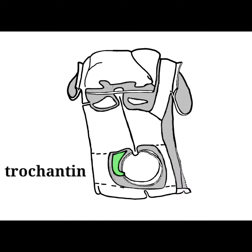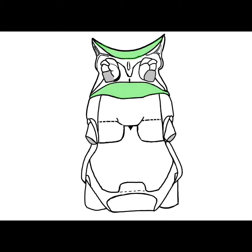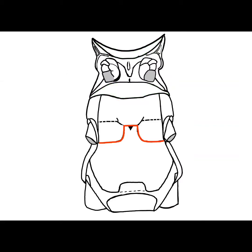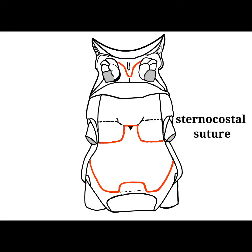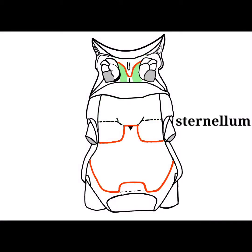The trochantine is a precoxal sclerite. The sternum of the thorax may be divided into the eusternum and spinasternite. The eusternum has an anterior thin sclerite called the presternum, and the rest is further divided by a sternocostal suture into an anterior basisternum and a posterior sternellum.